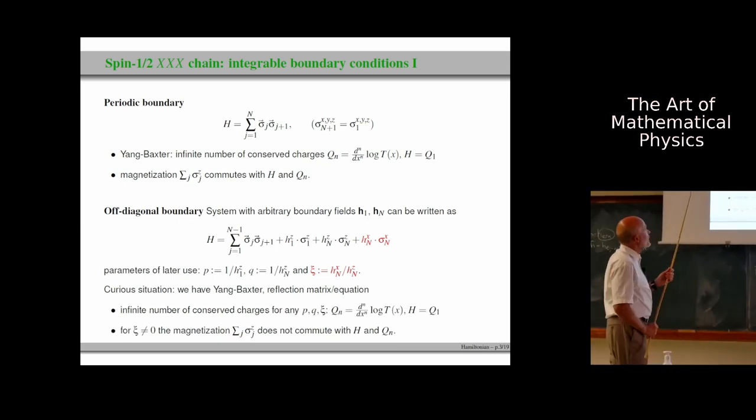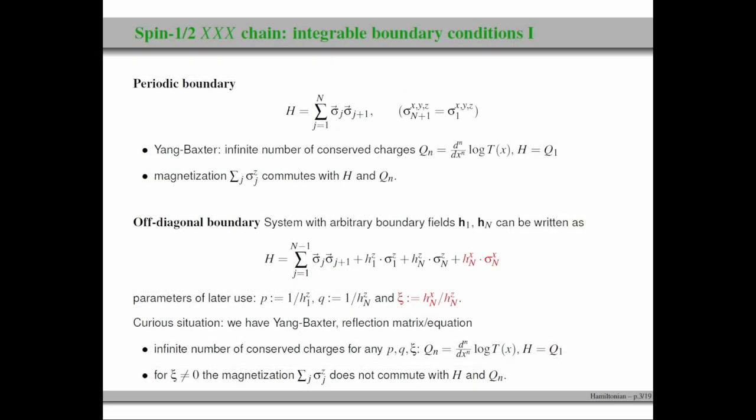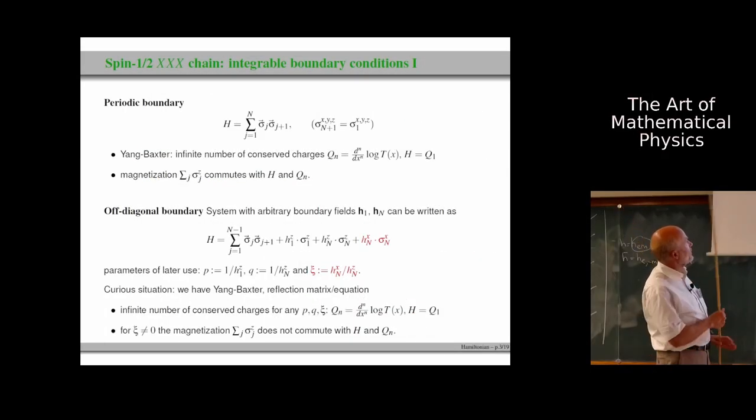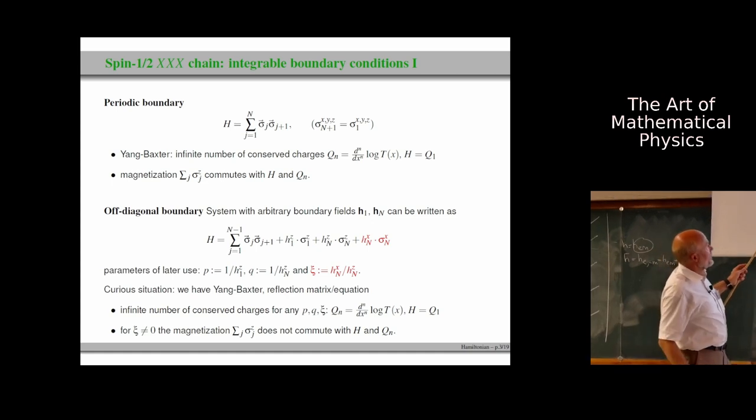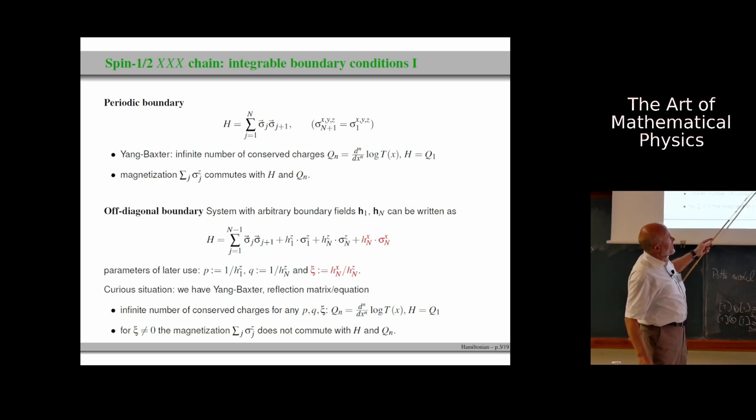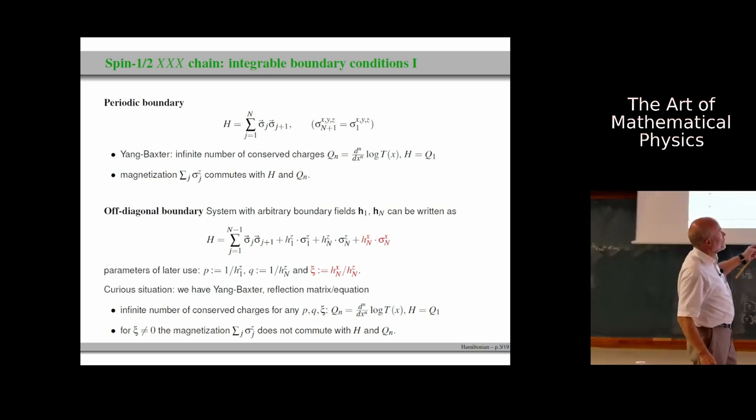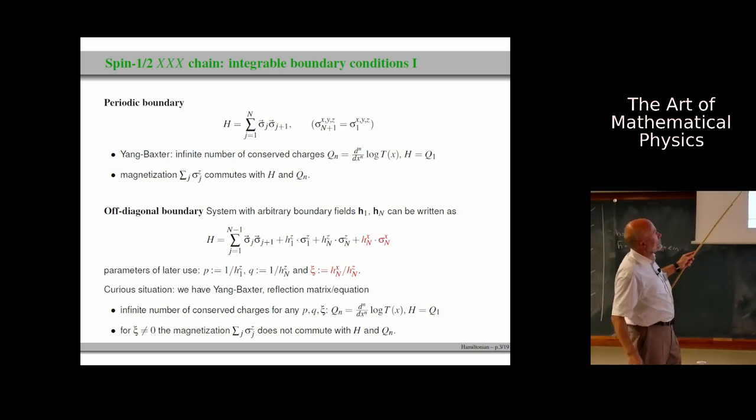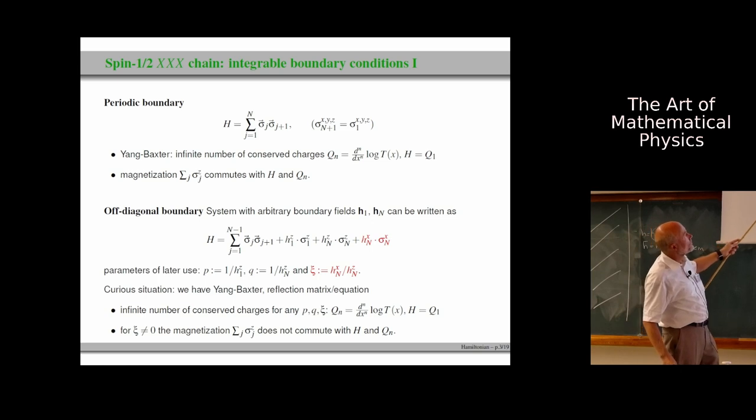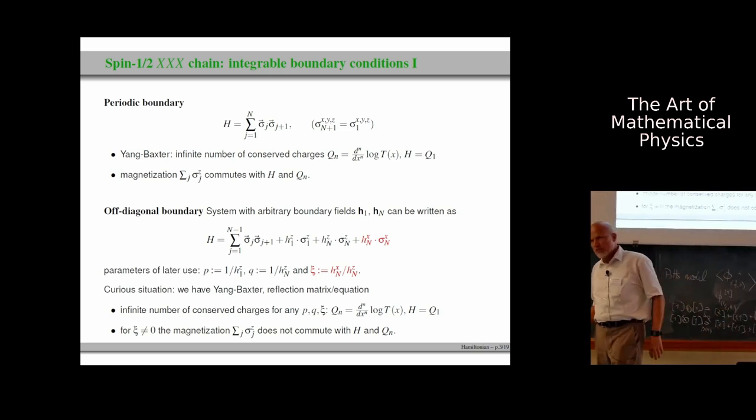The Hamiltonian for the periodic case is given here for the case with open boundary and fields on sites one and n is given there. We are dealing with isotropic bulk interaction. Sigma vector denotes the three Pauli matrices acting on Psi J and here on Psi J plus 1. This is the usual spin exchange, SU invariant. Due to Yang-Baxter and the usual reasoning, we get infinitely many conserved charges by the log derivatives of the transfer matrix. The Hamiltonian is the first logarithmic derivative.